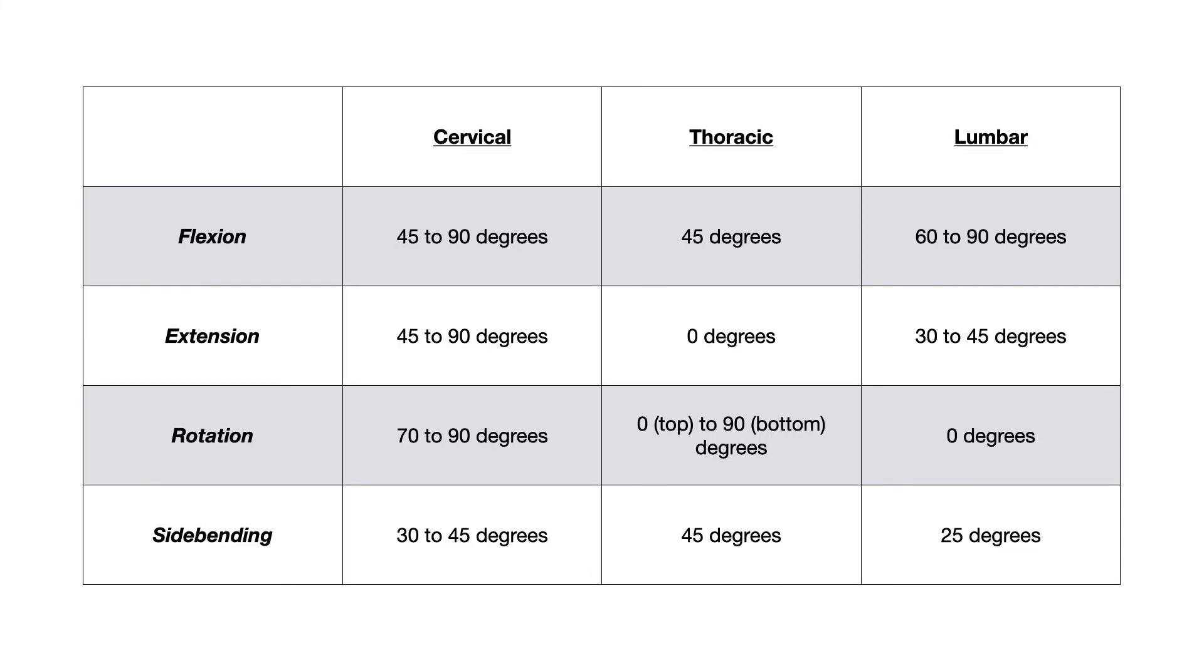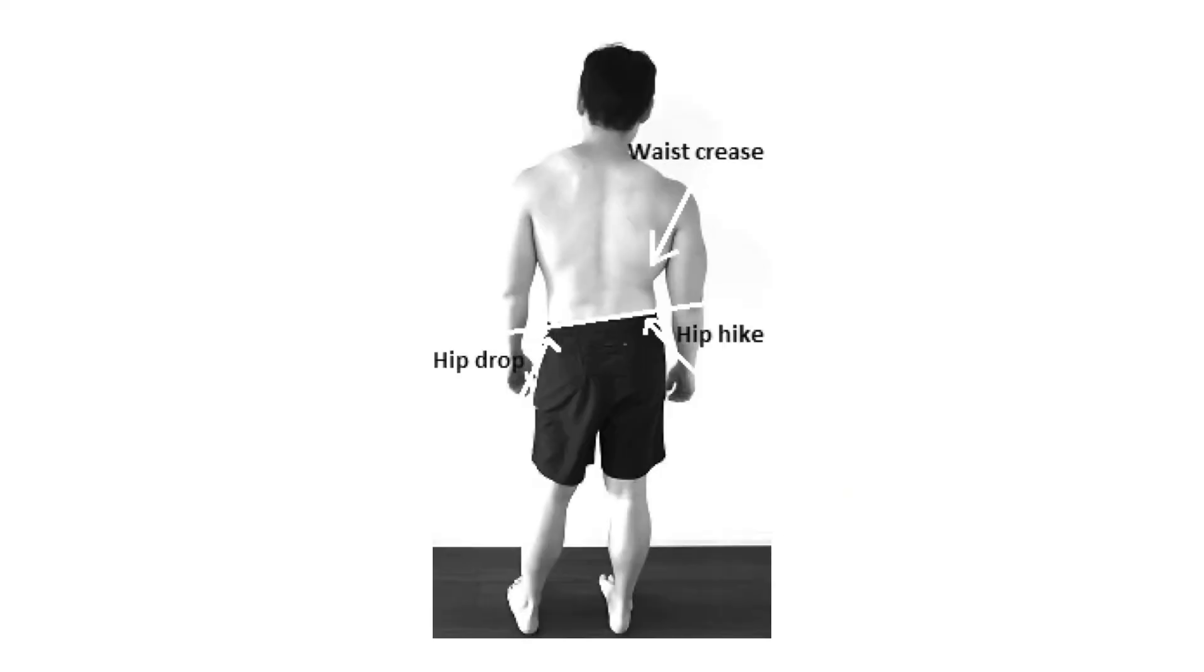Rotation is easy. The lumbar spine doesn't rotate, and side bending is only 25 degrees. And if this shows up on your in-class exams or on Comlex, it's going to be this cute little hip drop test.